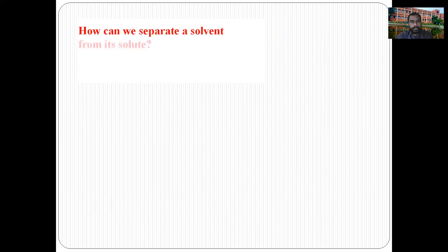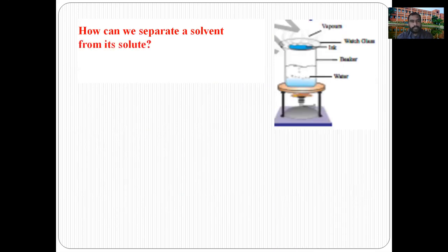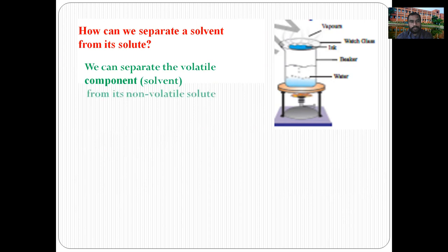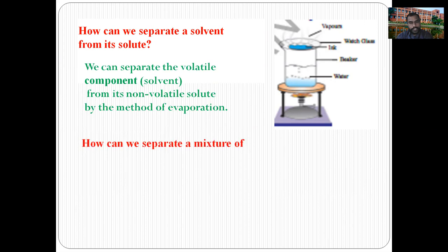How can we separate a solvent from its solute? If the solvent is volatile, we can separate the volatile solvent component from its non-volatile solute by the method of evaporation. Evaporation is the process of vaporization of a liquid below its boiling point.